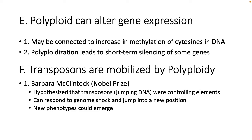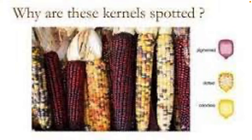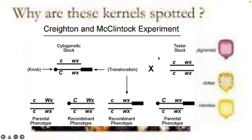Polyploidy can also alter gene expression — it can be connected to increased methylation of cytosines in DNA or short-term silencing of some genes. Transposons — genes that can jump from one chromosome to the next — can be mobilized in polyploidy. Barbara McClintock, who won the Nobel Prize for this, hypothesized that transposons were controlling elements that could jump to a new position, creating new phenotypes. Her research came from observing kernels in corn with purplish-blue pigmentation — she asked why kernels were spotted, and it turned out transposons were the cause.